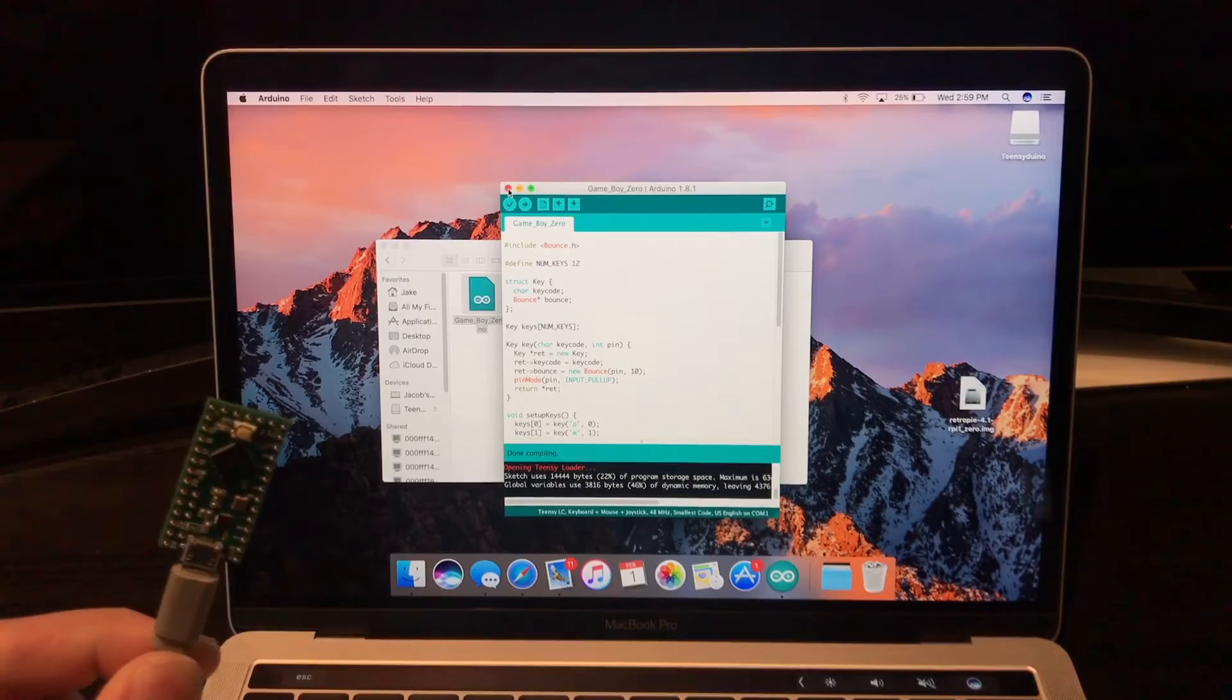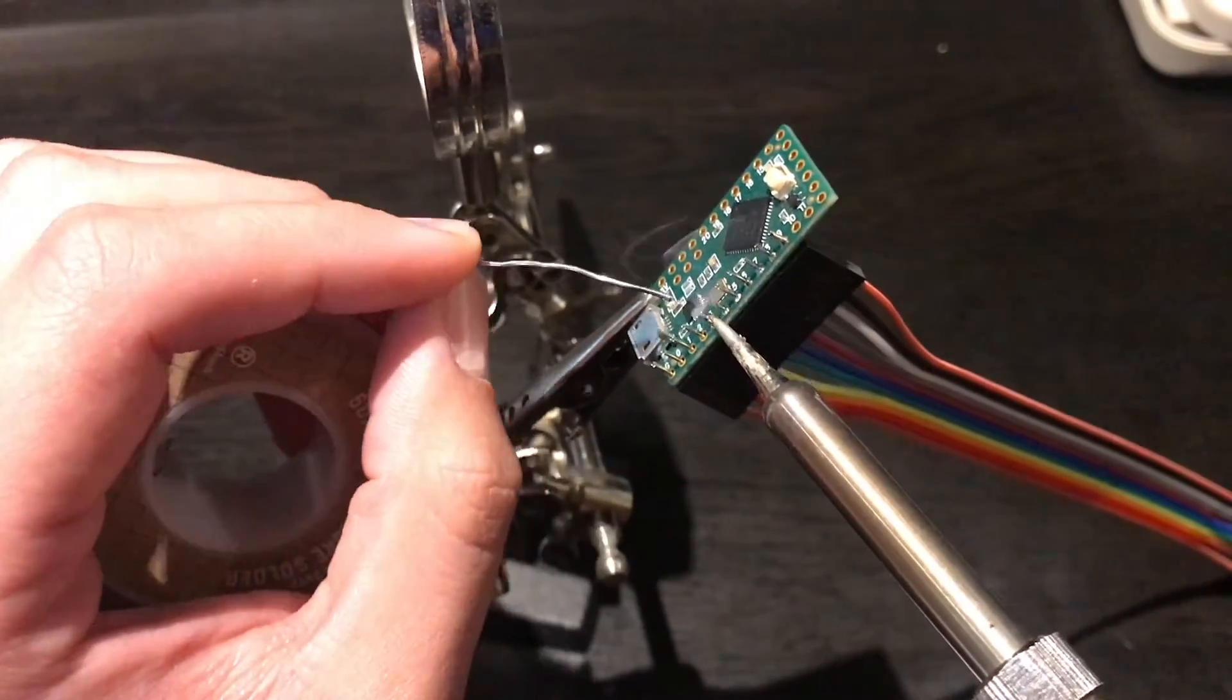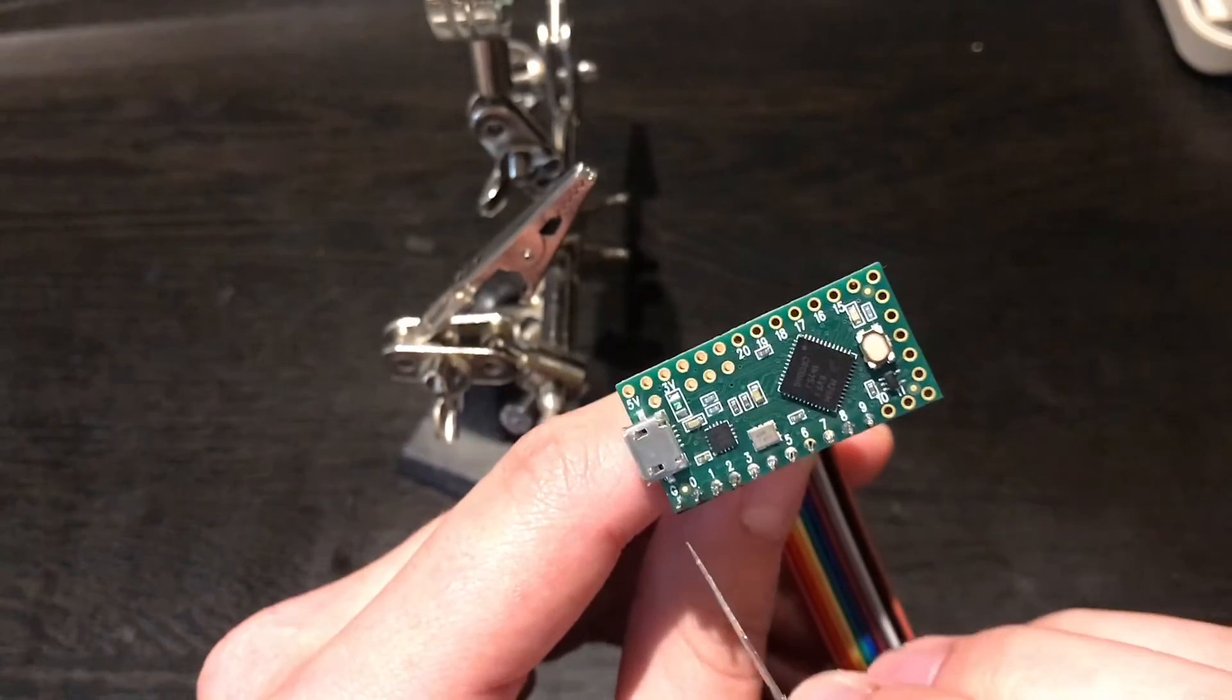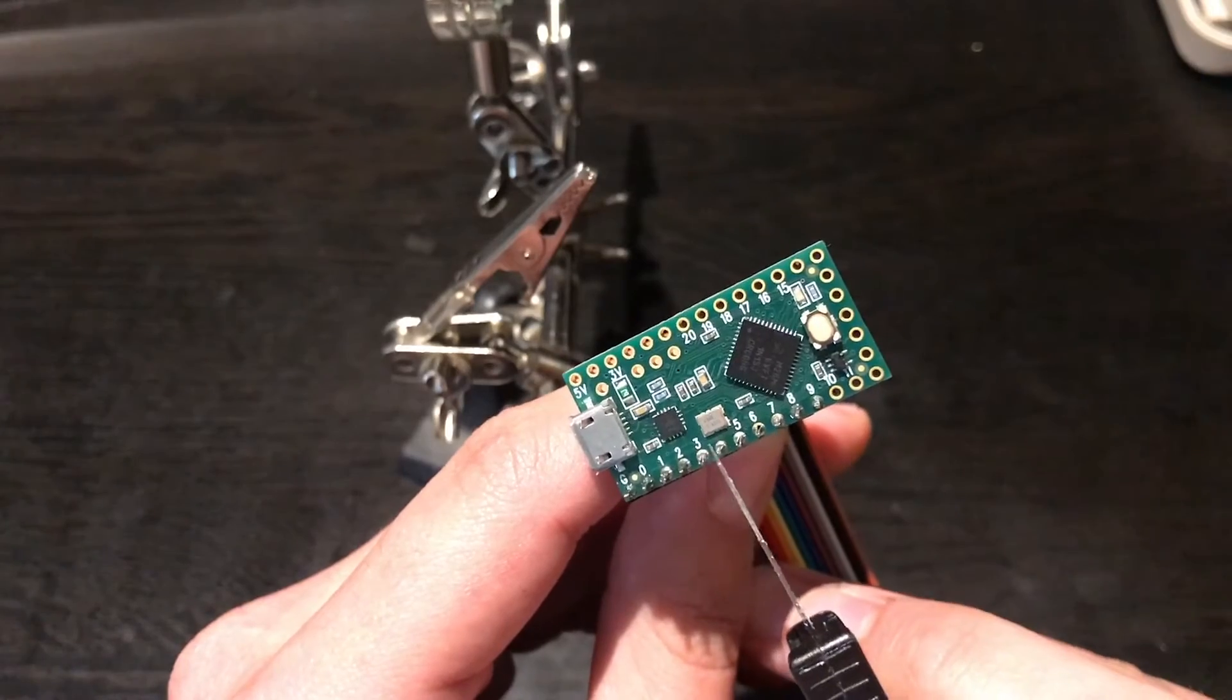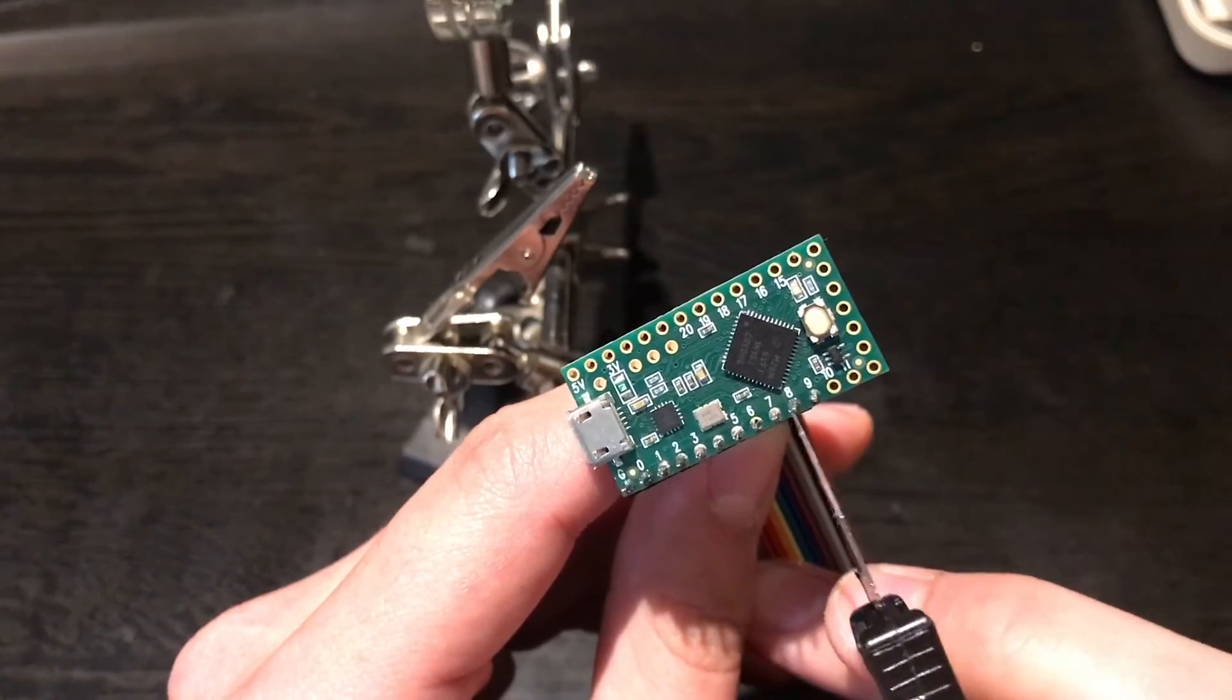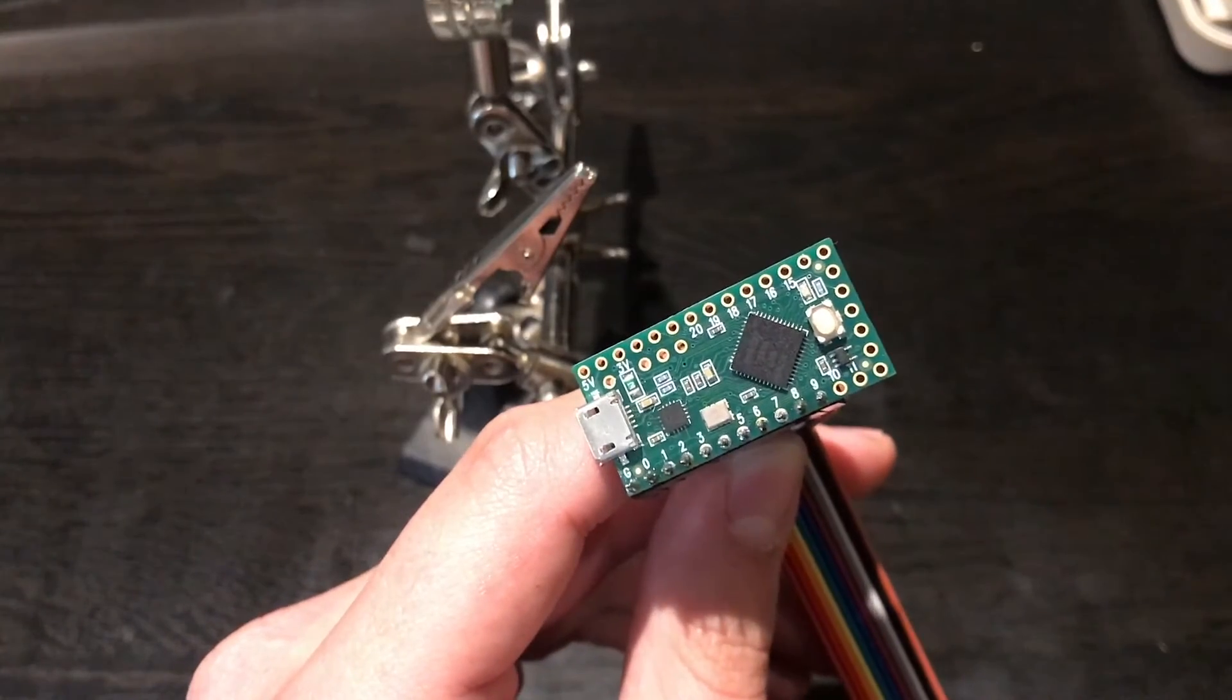So we're all done with the setup process with the Teensy, now time to wire it up and test it out. When you go to wire up your Teensy, you're going to wire it up ground, up, down, left, right, A, B, X, Y, start, select, and then right, left, once we get there. But for now, we're just going to leave 10 and 11 blank.